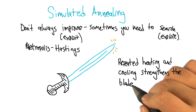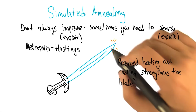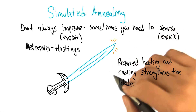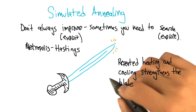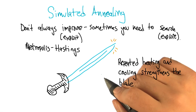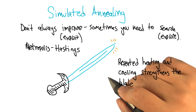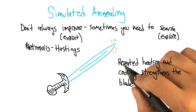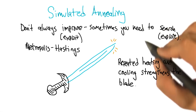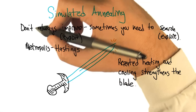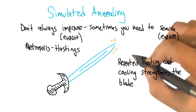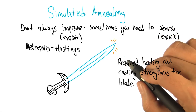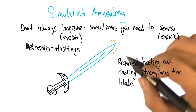We're going to look at another algorithm that takes the idea of random restarts one step further. Instead of just waiting until you hit a local optimum to decide that you're going to randomly restart, there's always a chance of taking a step in a downward direction while you're doing hill climbing. The algorithm we're talking about concretely is called simulated annealing. The basic idea is that we don't always improve — sometimes we need to search, to take the point where we are and wander away from it, with the hope of finding something even better.